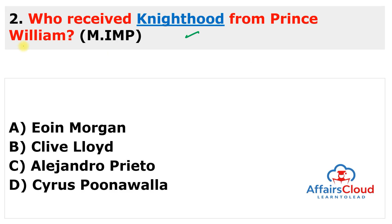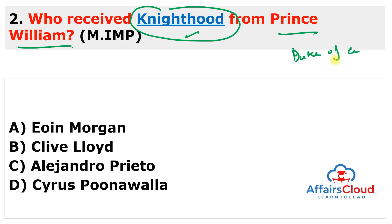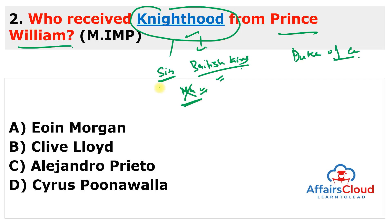Next question: Who received knighthood from Prince William? The keyword here is the knighthood award given by Prince William, the Duke of Cambridge. A knighthood is a title given to a man by the British king or queen for his achievements or services to his country. A man who has been given a knighthood can put 'Sir' in front of his name instead of 'Mister'.